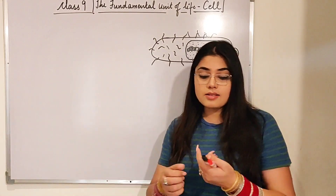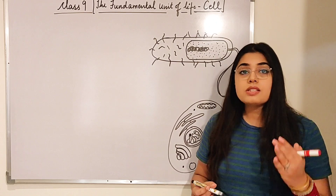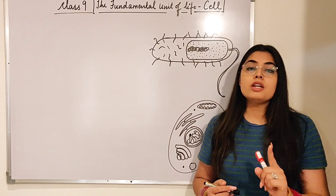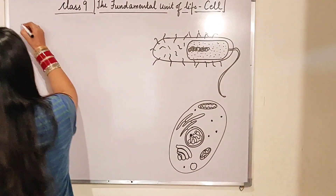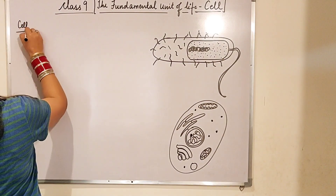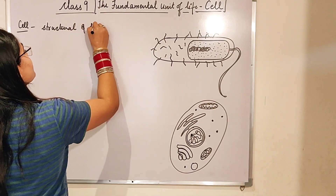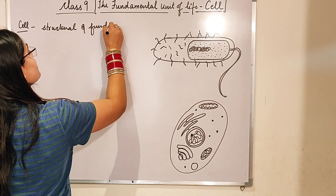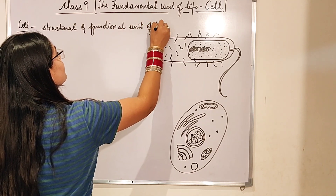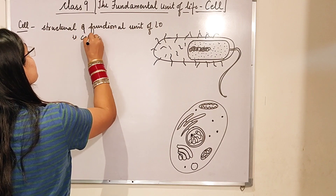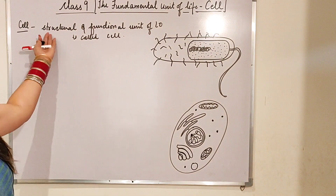If anyone asks you what is the definition of a cell, you will say: the structural and functional unit of living organisms is called a cell. I'm writing it here — 'The structural and functional unit of living organisms is called a cell.'